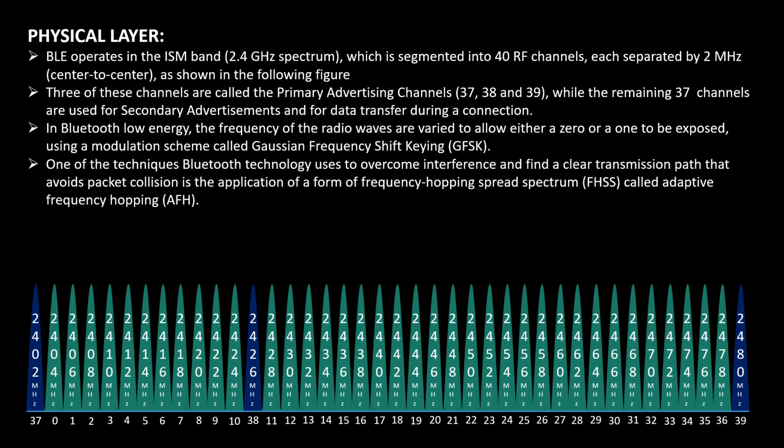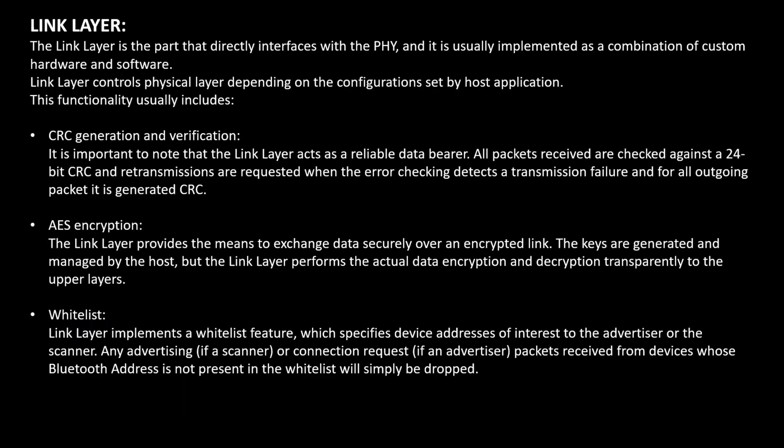Since Wi-Fi also uses the 2.4 GHz spectrum, there are possibilities of packet drops and packet collision. To handle this, Bluetooth technology uses a technique called advanced frequency hopping, which we will cover in the coding sessions. The link layer is the part that directly interfaces with the physical layer and is usually a combination of hardware and software. The link layer controls the physical layer on what actions, data transmission, and reception are to be done.